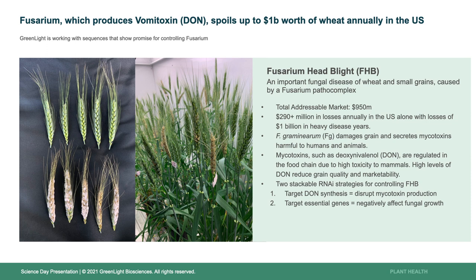The first project is Fusarium Head Blight, which causes annual damage of over a billion dollars and is caused by the pest Fusarium graminearum, affecting small grains such as barley, wheat, and oats. The total addressable market is over $960 million. $290 million of damages occur in the U.S. every year, and the main fungal pathogen in the U.S. is Fusarium graminearum.